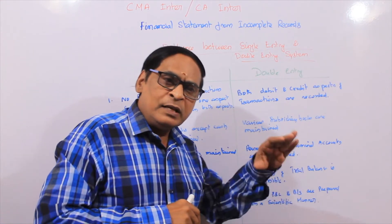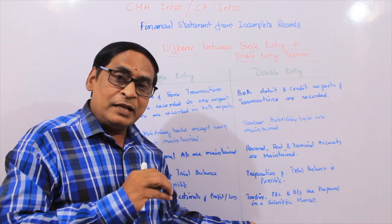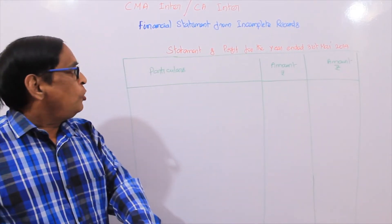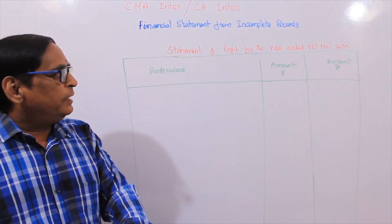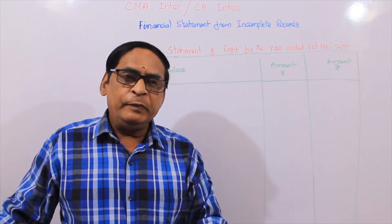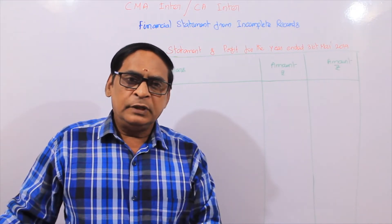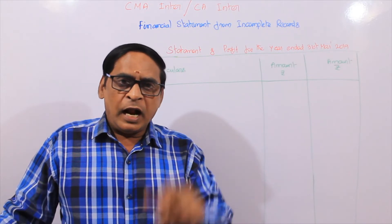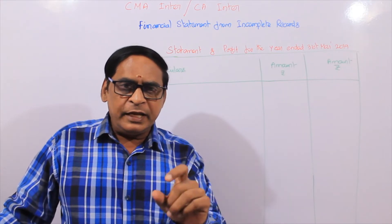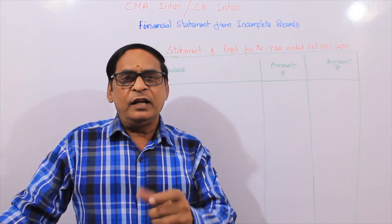Income tax authorities and the tax department require the double entry system. Let us see about the statement of profit for the year ending 31st March 2018. The format includes: closing capital, add drawings, less capital introduced — giving adjusted capital, then less opening capital to arrive at profit or loss.